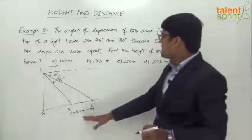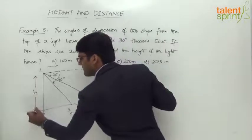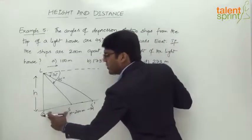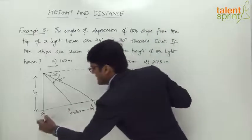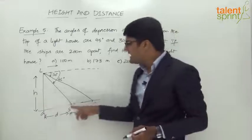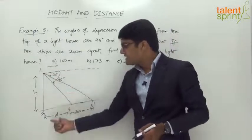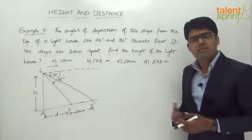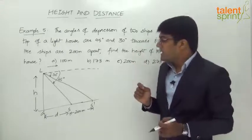We need to find the height of the lighthouse, which we call h. The distance between the foot of the lighthouse G and ship S, let's call it d. We now have two right-angle triangles: triangle GSL with base d, and triangle GS'L with base d plus 200 — similar to the previous question but in terms of angles of depression.